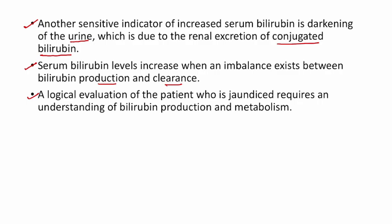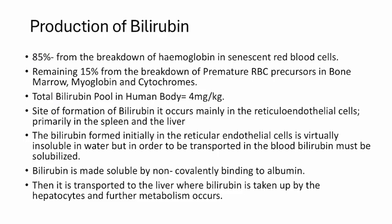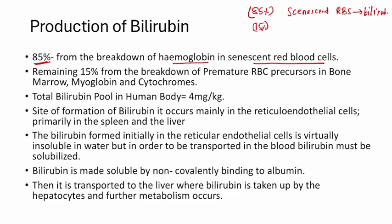A logical evaluation of the jaundiced patient requires an understanding of bilirubin production and metabolism. Regarding production of bilirubin: 85 percent is produced from the breakdown of hemoglobin in senescent red blood cells. The hemoglobin is broken down to form bilirubin. The remaining 15 percent comes from premature RBCs and RBC precursors in bone marrow, and from myoglobin and cytochromes. Total bilirubin production is approximately 4 mg per kg in the body.